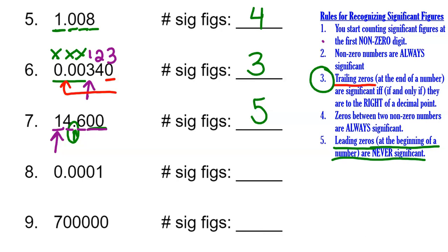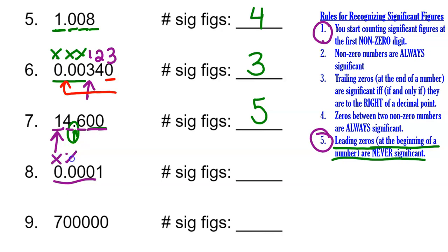Number eight has a bunch of leading zeros. The leading zeros rule tells us they are never significant, even if some are to the right of the decimal point — if they are at the very beginning of the value, they are leading zeros. Applying rule one, we skip every zero until we hit the first non-zero number, which is the one. That is the only significant figure, so number eight has one significant digit.